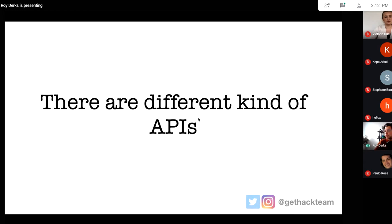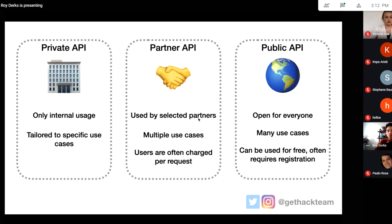Before we look at some actual APIs, it's good to know there are different kinds. There are three main types of APIs: a private API, a partner API, and a public API.